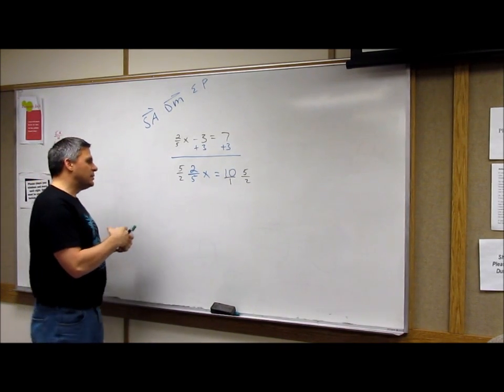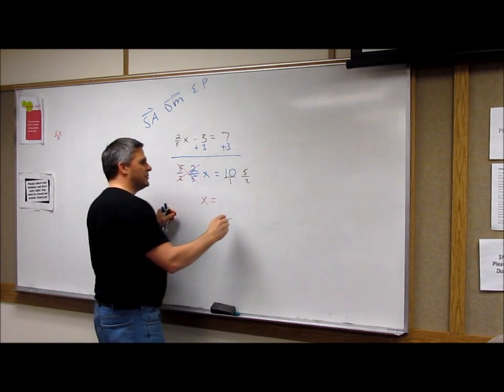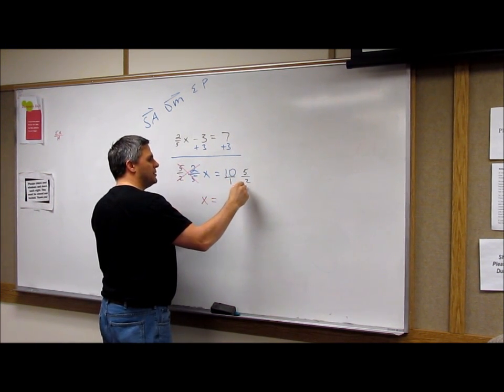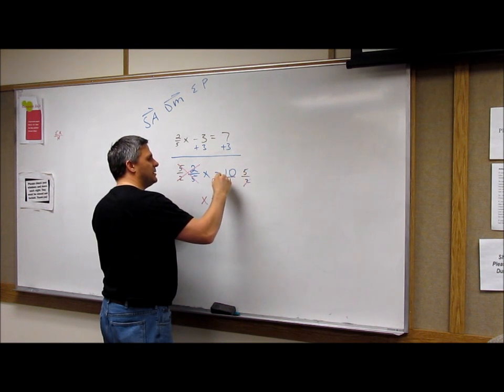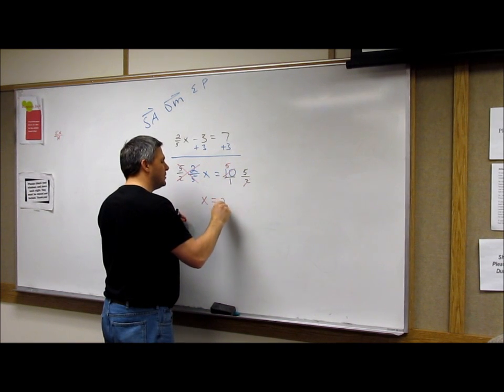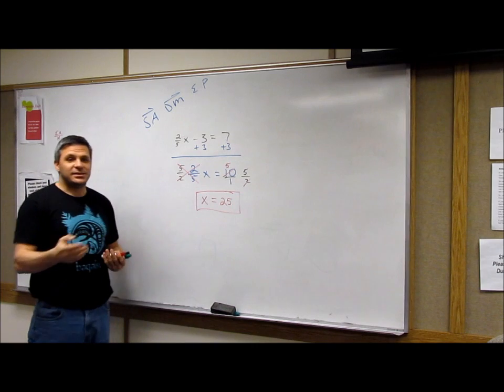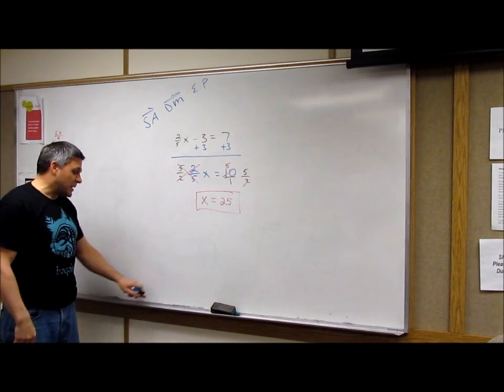So now, cancel, cancel, and I get X is equal to. And 2 goes into 10, 5 times. And 5 times 5 is 25. So this one turned out really nice and neat. And that was really by accident.